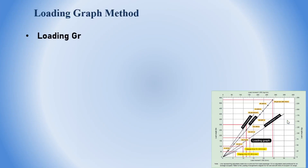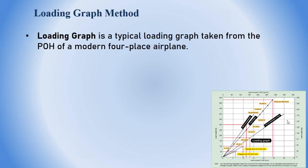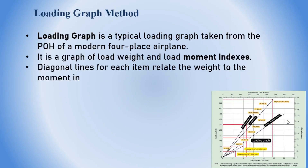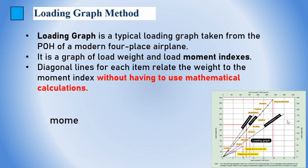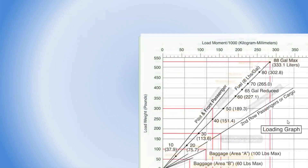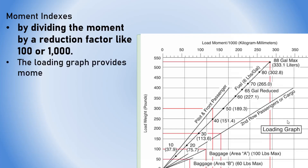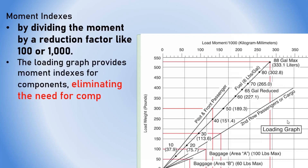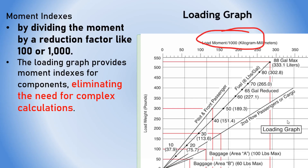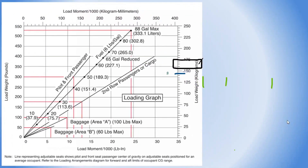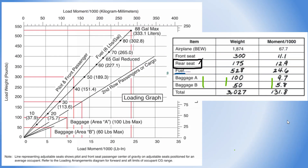Alternatively, you can use the loading graph method, which simplifies and speeds up pre-flight weight and balance computation. This method uses charts and graphs from the pilot operating handbook — including loading graphs and moment indexes. By dividing the moment by a reduction factor like 100 or 1,000, the loading graph provides moment indexes for components, eliminating the need for complex calculations.